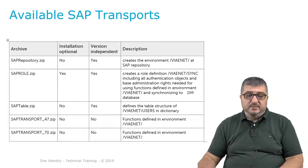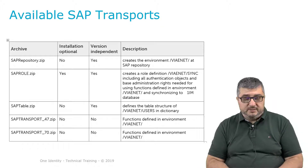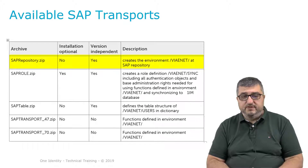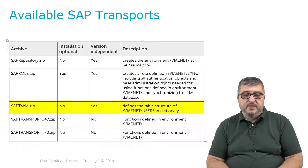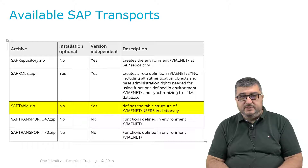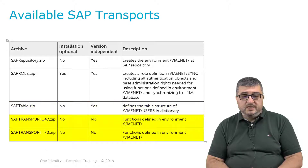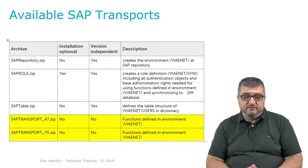There is a specific order in which the transports need to be imported. The first transport is the SAP repository transport, which creates the namespace in the SAP environment — providing a namespace called via ENET. The second transport is the SAP table transport, which creates additional tables in that namespace to hold preliminary data while accessing the system. The third transport depends on the version of your SAP environment — whether it's SAP 4.7 or 7.0 — and requires selecting the appropriate sub-transport package.